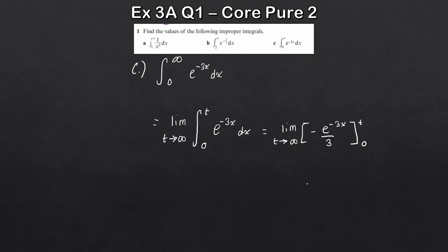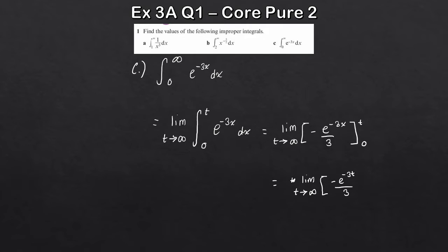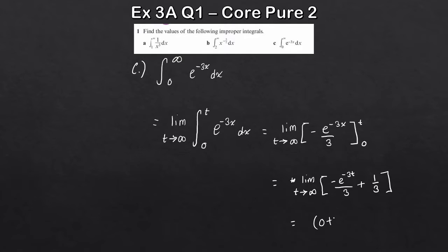Substituting the limits: minus e to the minus 3t over 3, minus the result at x equals 0. At x equals 0, e to the 0 is 1, so that term is minus a third. Minus of minus a third becomes plus a third. As t tends to infinity, e to the minus 3t tends to 0. So we get 0 plus a third, giving us a third as the value of the integral.